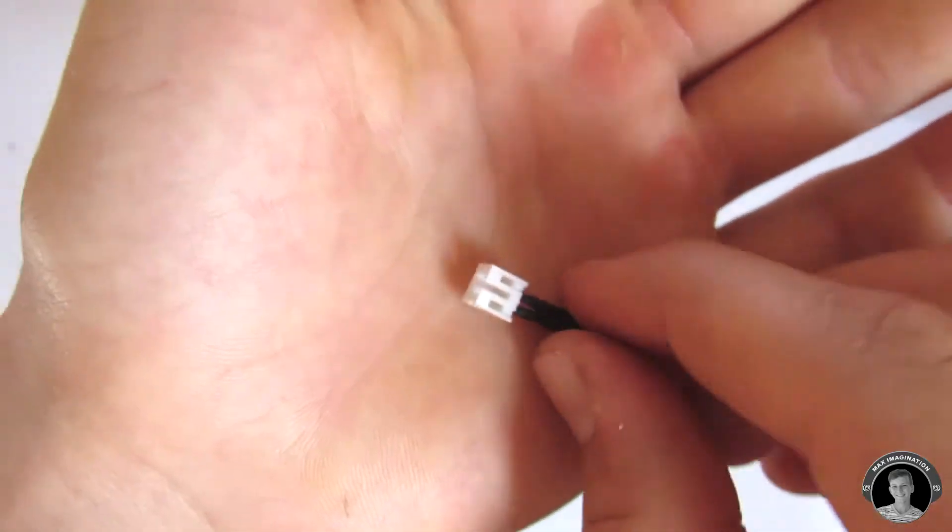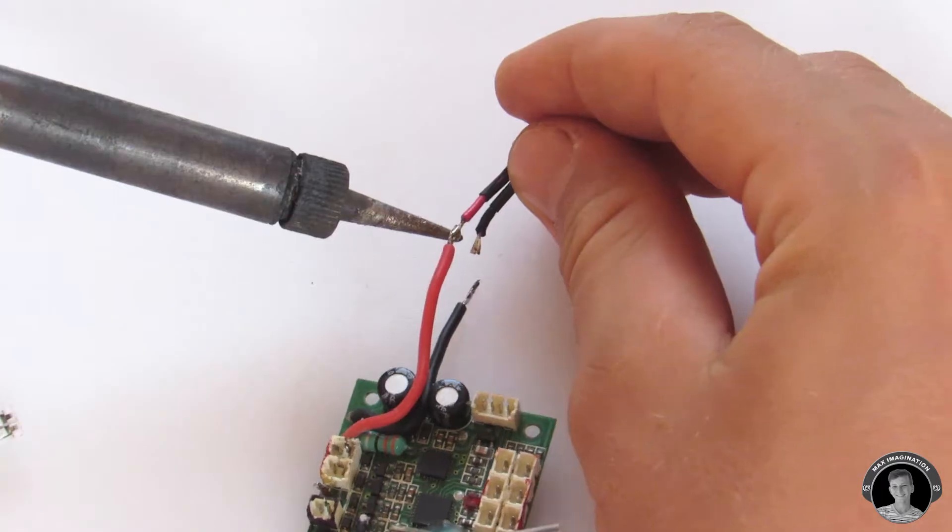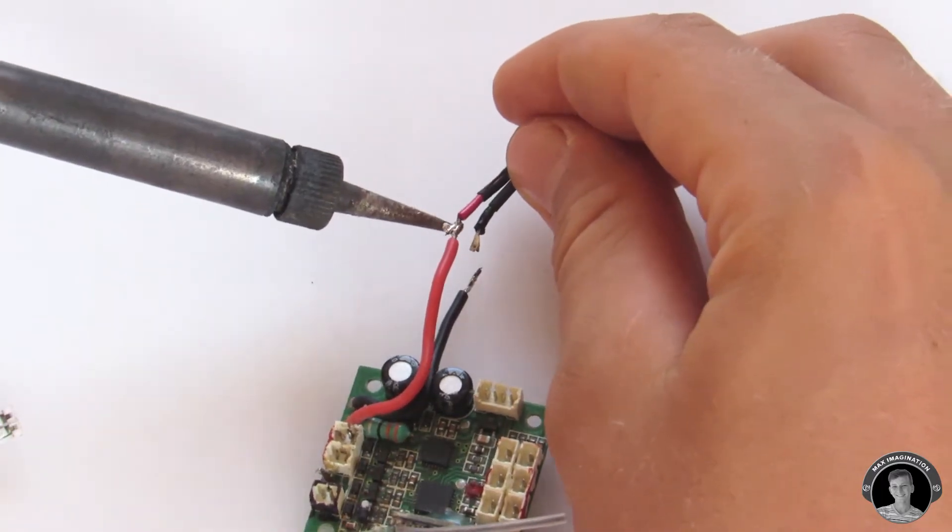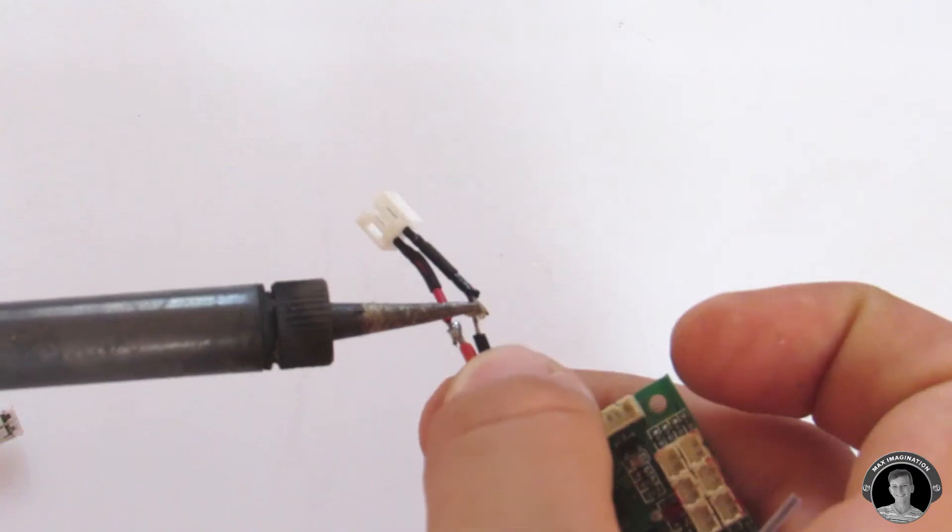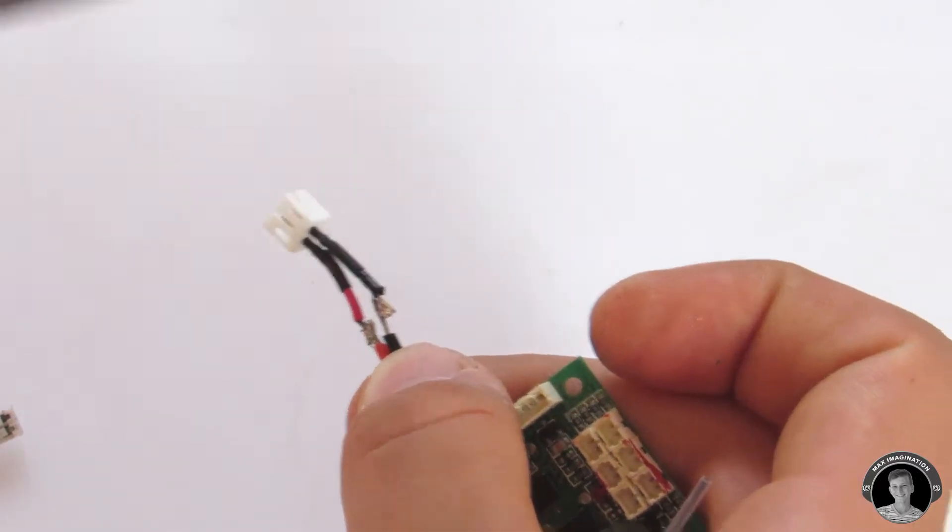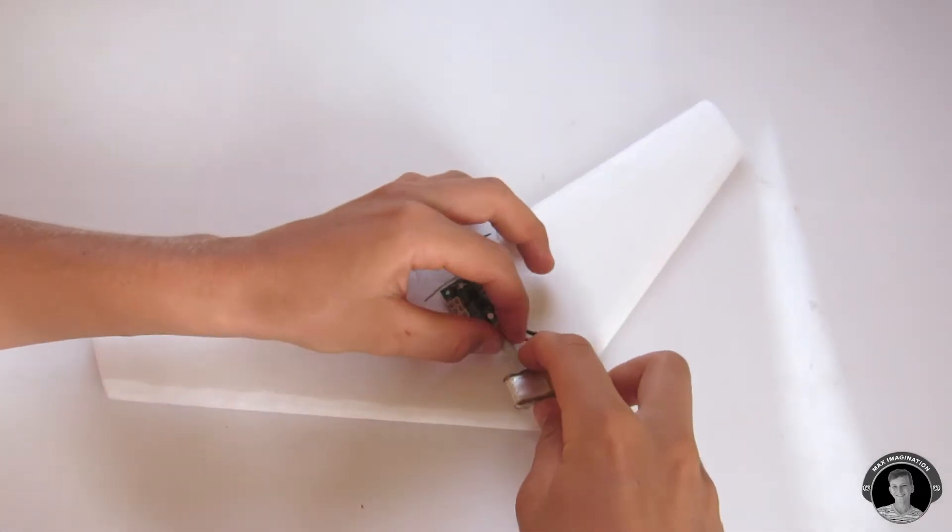Since my drone receiver didn't already have a female connector soldered onto it, I'm going to do just that and it'll make the connection between the receiver and the battery a lot easier. So we won't even need a switch. Now it's time to secure all the components down to the foam wing.